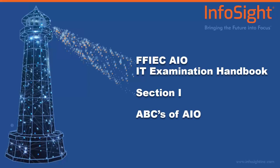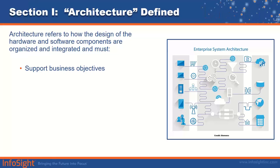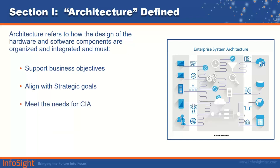The handbook is broken down into sections. Section one covers the ABCs of AIO — a high-level overview of what AIO is. Architecture is defined as how hardware and software components are designed, organized, and integrated to support business objectives, how they align with strategic goals, and how they meet the needs of confidentiality, integrity, and accessibility, and how they minimize operational and reputational risk.